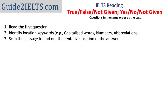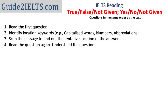Scanning the passage means you read quickly while looking for specific information. Once you feel you have a tentative location of the answer in the passage, go back to the question, re-read it, and understand it thoroughly. Remember, the language of the question is usually simpler than the language in the passage. Go back to the passage and read the relevant part. You may need to read two to three sentences to figure out the answer, as the information in one question sentence could be spread over two to three sentences in the passage.